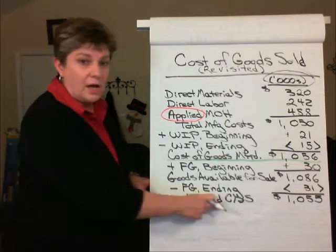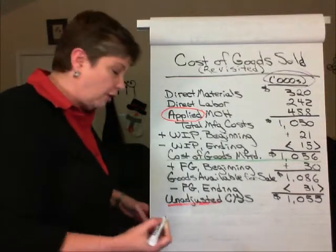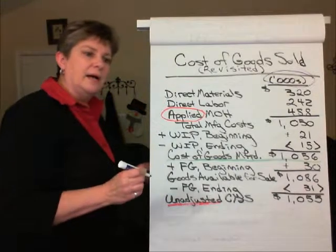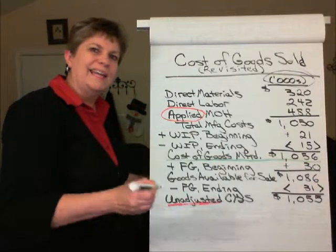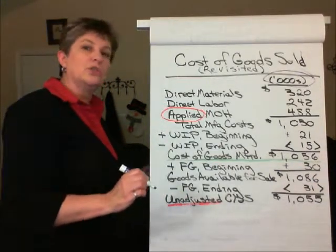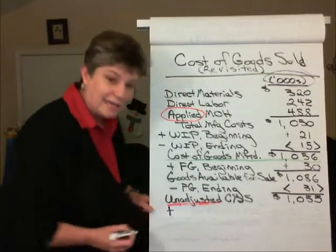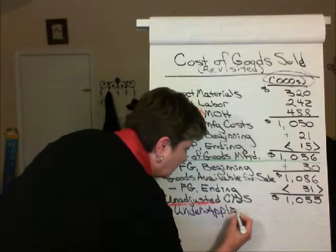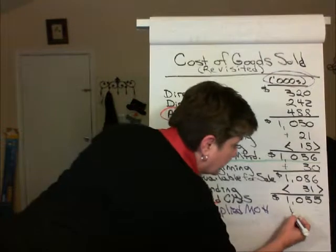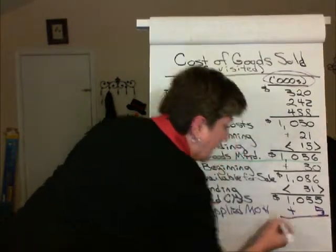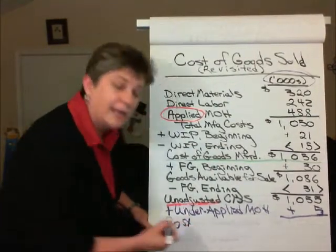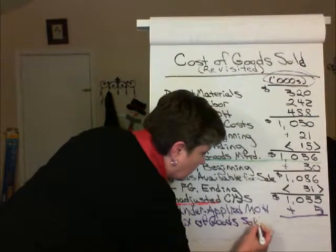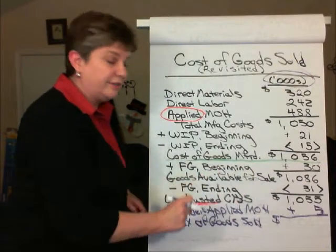We need to adjust this Cost of Goods Sold for that underapplied overhead. If you recall from the previous video, underapplied overhead was $5,000. Remember, we're bringing the Cost of Goods Sold up to what it would have been if actual overhead had been charged. Actual was greater than the applied overhead, so we need to add that underapplied overhead of $5,000. So our adjusted Cost of Goods Sold, or our final Cost of Goods Sold which will be reported on the Income Statement, is $1,055,000 plus $5,000.